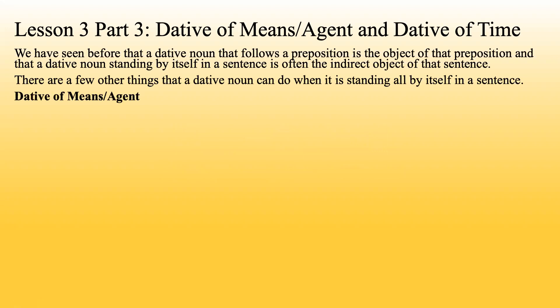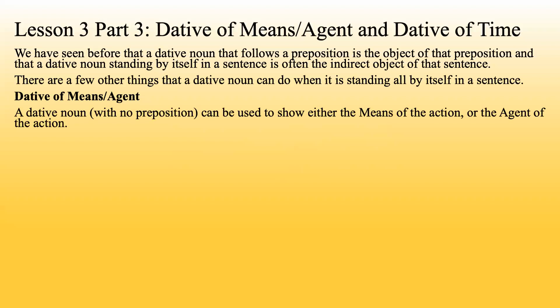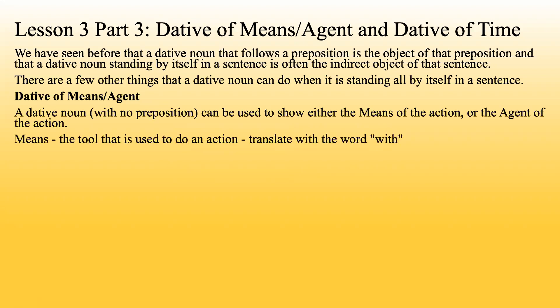First is the dative of means or agent. A dative noun with no preposition can be used to show either the means of the action or the agent of the action. Means is the tool that is used to do an action, which we translate with the word 'with.' This is normally going to be an object, not a person. An agent is the person that does an action, translated with the word 'by.'